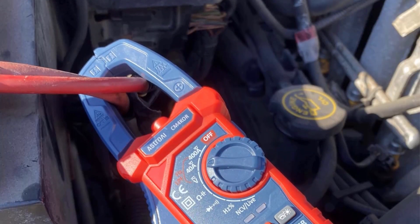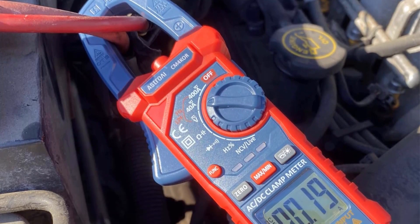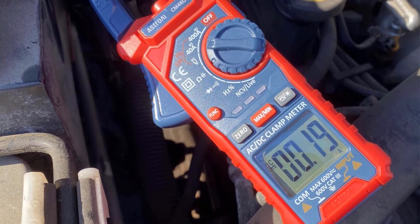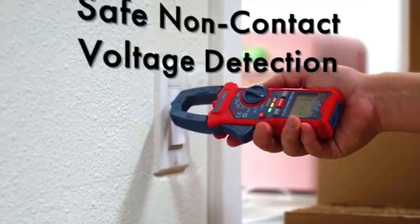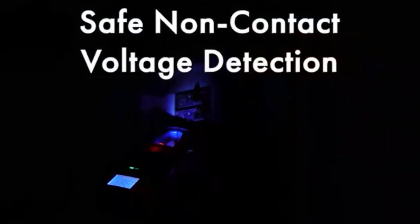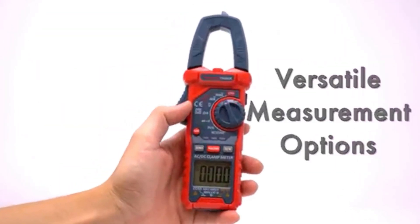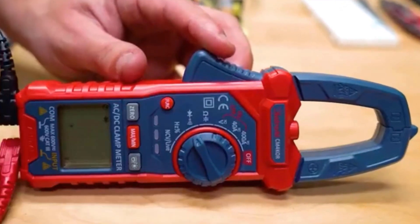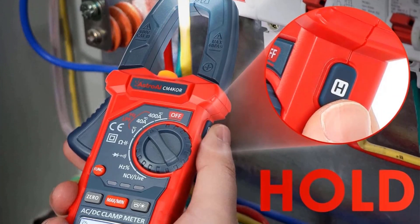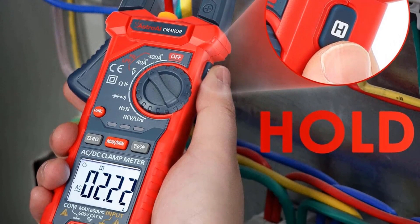Equipped with true RMS technology, the Astro AI 4000 Counts Clamp Meter delivers accurate readings, even in irregular electrical environments. Its large, backlit 4000-count display ensures clear visibility in any lighting conditions, while the data hold and maximum minimum functions add convenience during analysis.